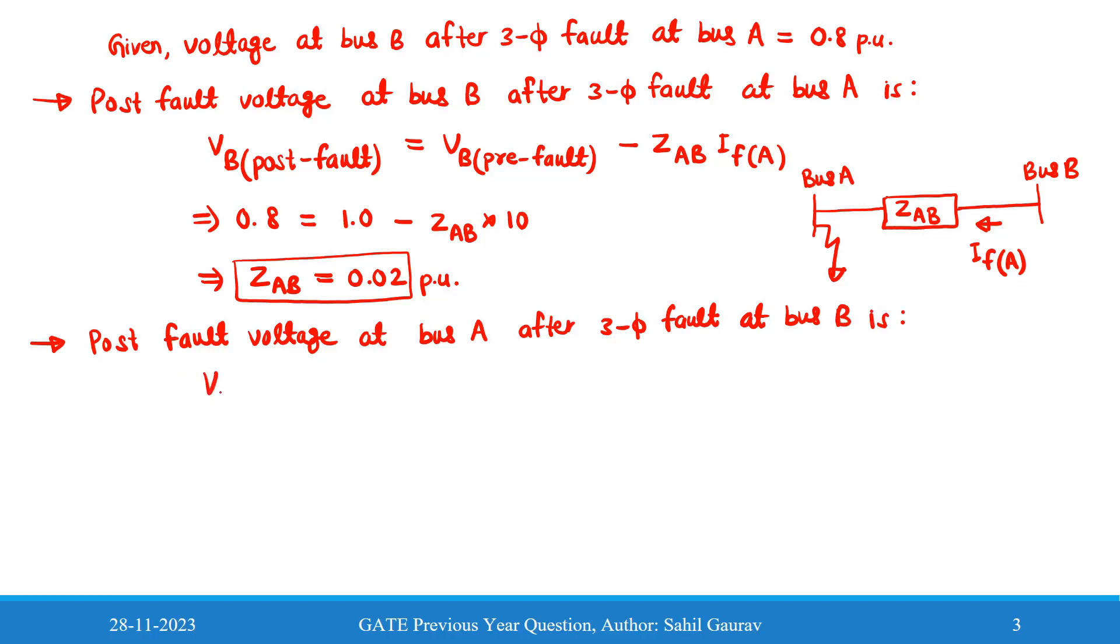So we are going to write the expression as the previous one. V_A(post-fault) equal to V_A(pre-fault) minus Z_AB times the fault current at bus B. So it is nothing but the voltage difference delta V. In some textbooks you can also find this expression as delta V. So if you want to write this in schematic then you can make like this.